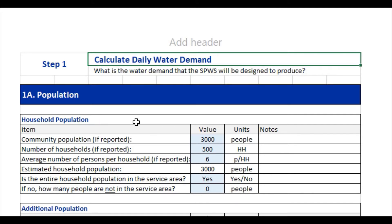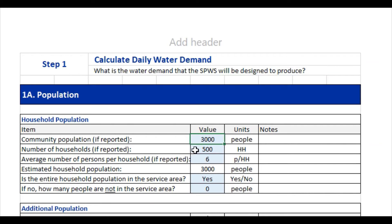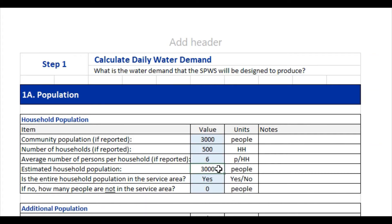As the first part, we're going to determine the household population. If the total population is reported, you can enter that number here. But you may also want to break it down by the number of households and the average household size, or persons per household. Those multiplied together give you the estimated household population, which is automatically calculated. You can see the fields in blue are ones for user input, whereas the fields not in blue are automatically calculated. If the entire household population is in the service area, you'd enter yes. If not, you can enter no and then enter the number of people not in the service area that might also be served by the project.